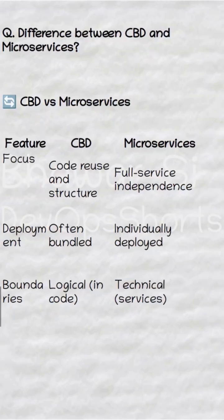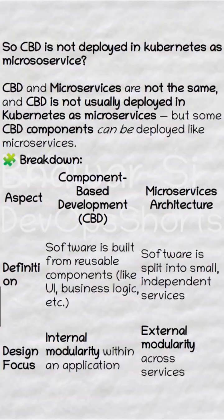The boundaries of CBD are logical — that is, in the code — where the components can communicate with each other, whereas the boundary of microservices is technical, meaning a microservice will communicate with other microservices via network protocol.